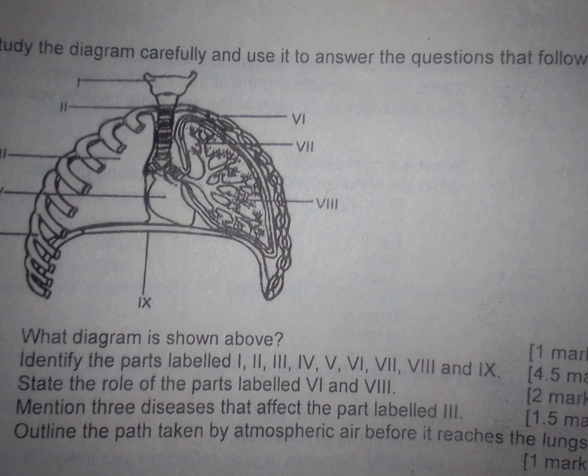Number 5, we have to describe the path atmospheric air passes through or goes into the lungs. So from the nostril, it goes into the larynx, then to the trachea, the bronchus, the bronchioles.